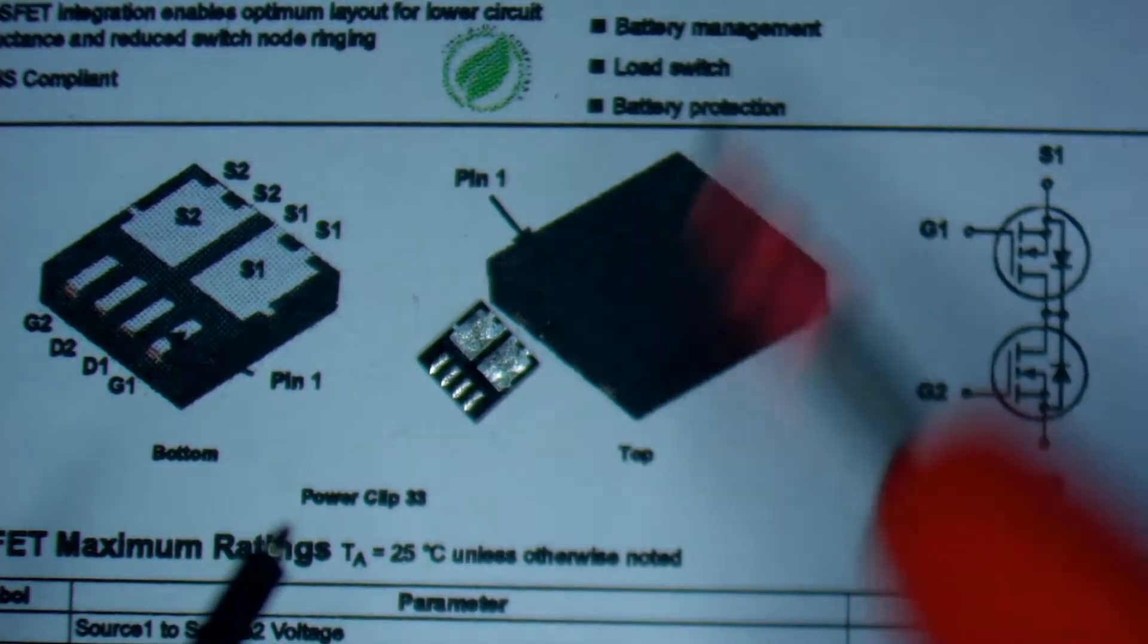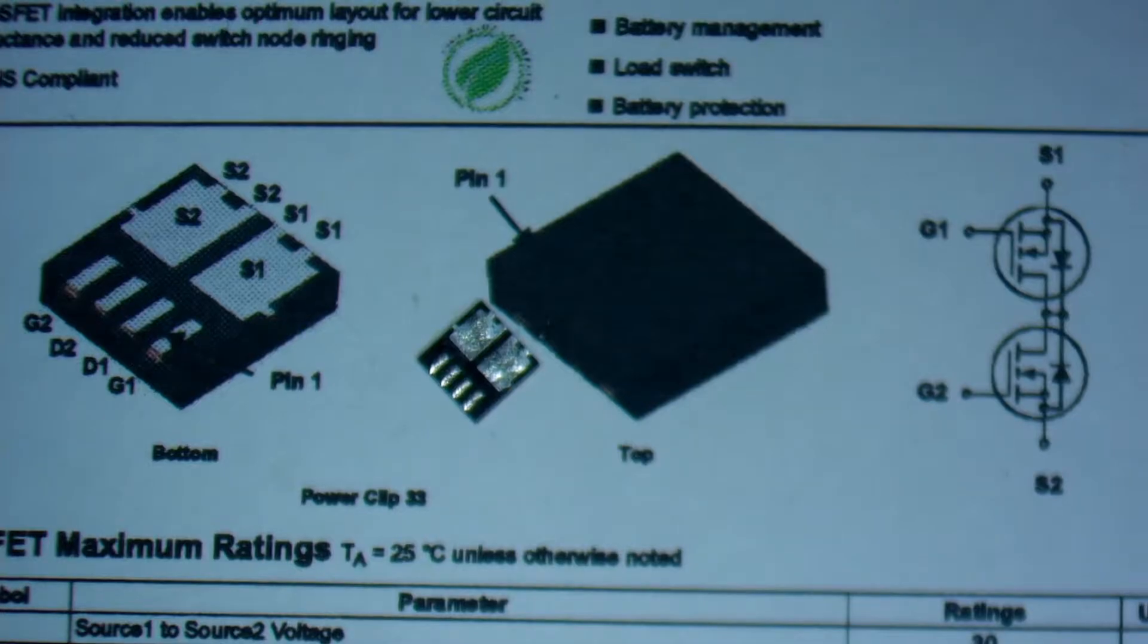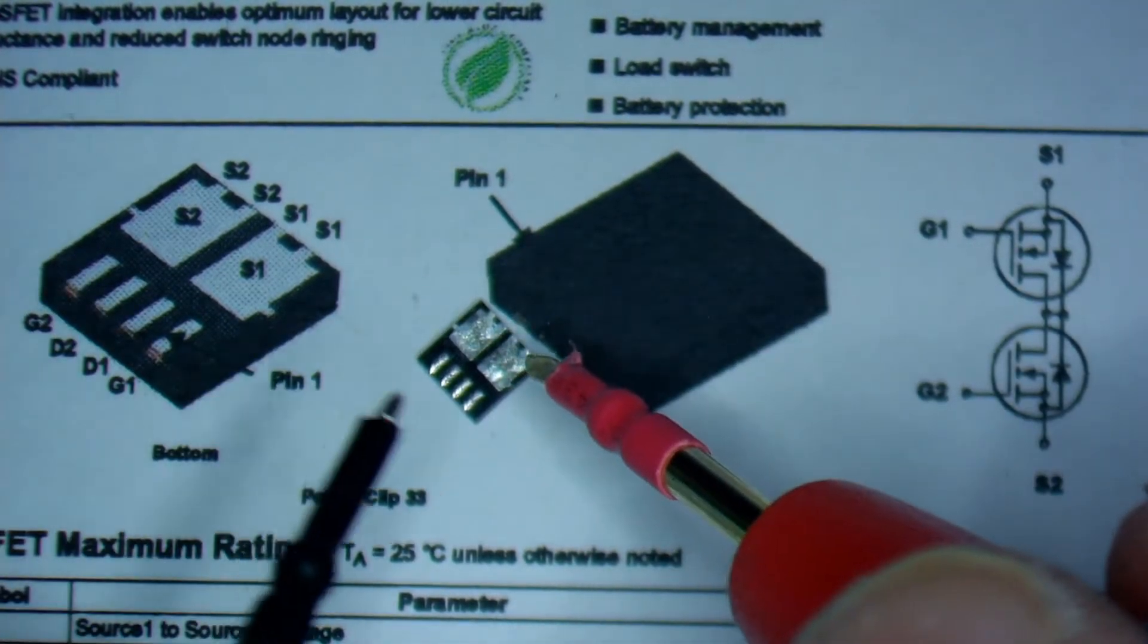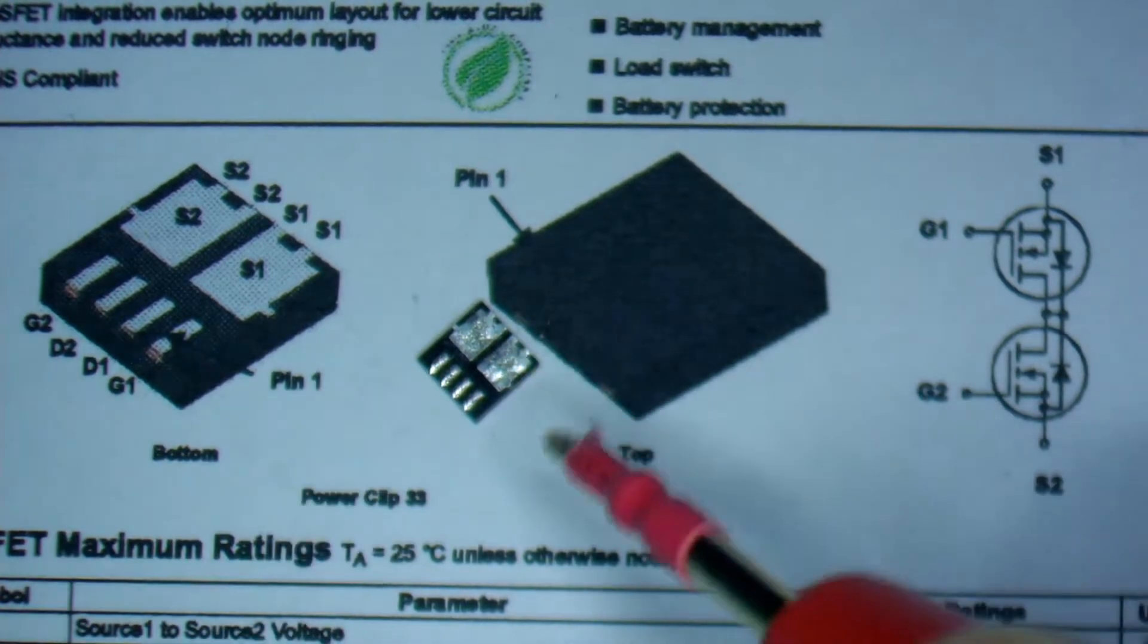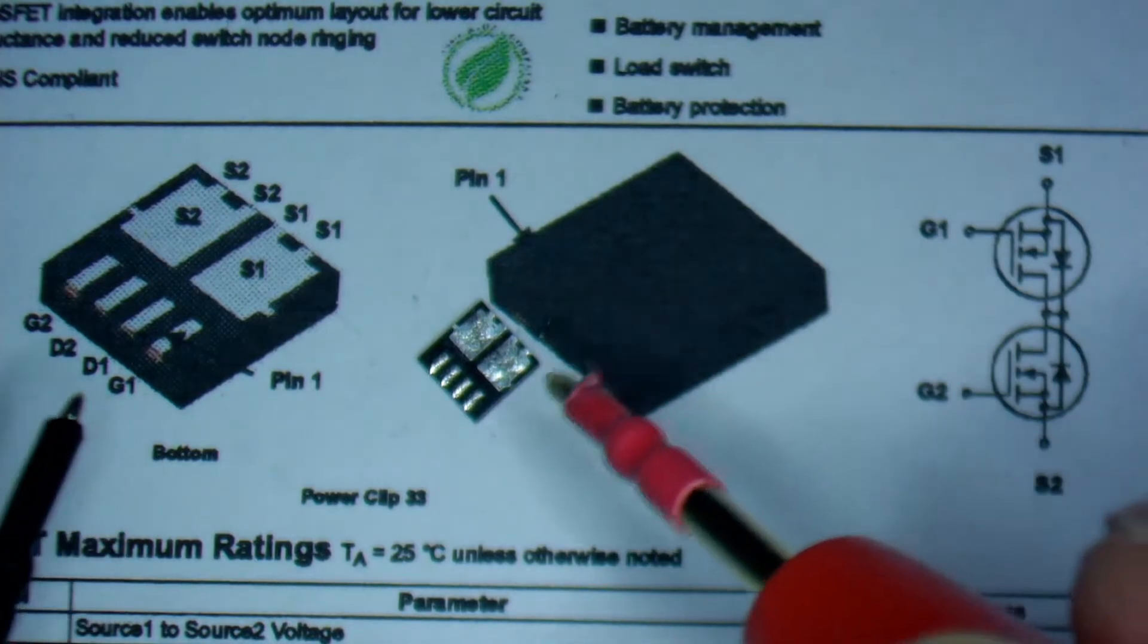In this case, this is a common drain MOSFET used on many modern MacBooks. So this one has two MOSFETs inside of the one package. It has two sources from both sides here, common drain obviously connected, and two gates.